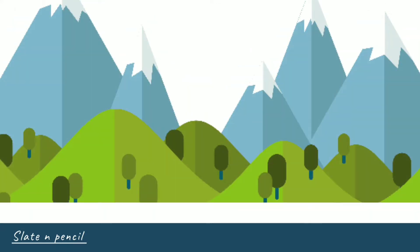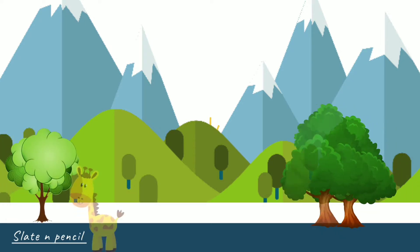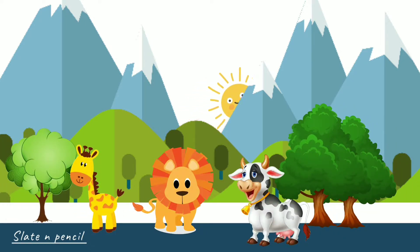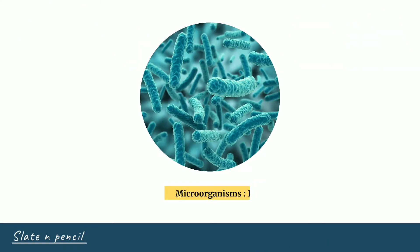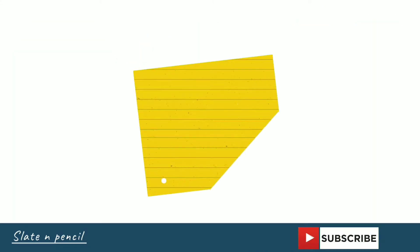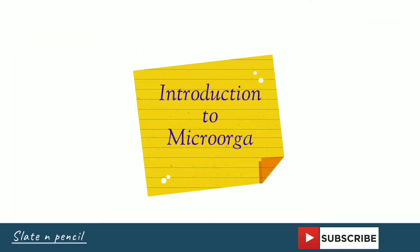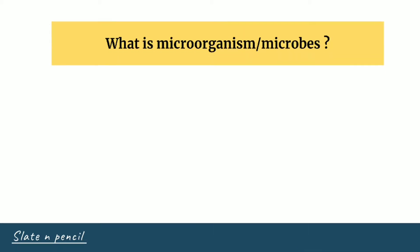We have seen several types of plants and animals. Besides them, there are other living organisms around us which we cannot see, and those are microorganisms. Moving on to the first topic — introduction to microorganisms — we will answer a question.